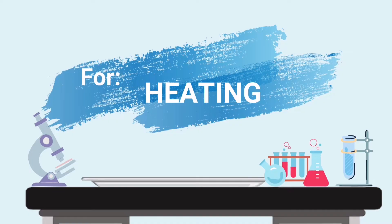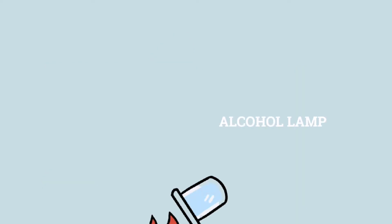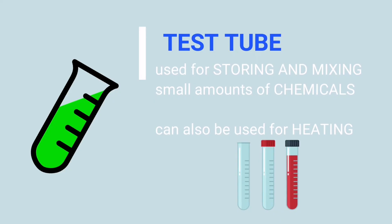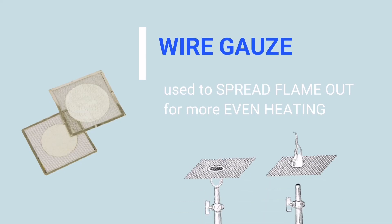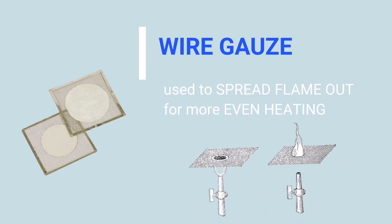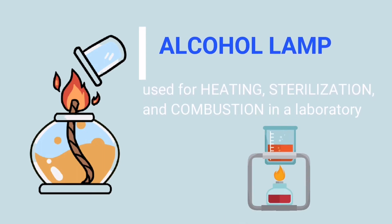Here are some tools for heating. Test tube, test tube holder, wire gauze, and alcohol lamp — these tools are used for heating. A test tube is used for storing and mixing small amounts of chemicals and can also be used for heating. Test tube holder is used to hold the test tube while heating. Wire gauze is used to spread flame out for more even heating. An alcohol lamp is used for heating, sterilization, and combustion in a laboratory.